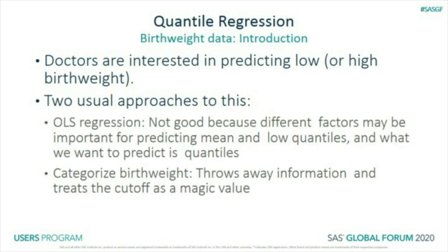Birth weight: doctors are interested in predicting low or sometimes high birth weight. Low birth weight babies are known to have additional risks, and high birth weight babies can cause problems in delivery. There are two usual approaches — OLS regression, which isn't good because different factors might predict the mean versus the low quantiles, and what we actually want to predict is the low quantiles.